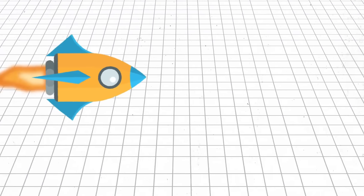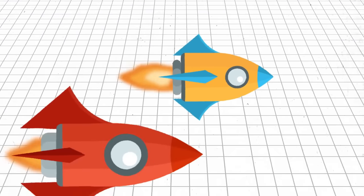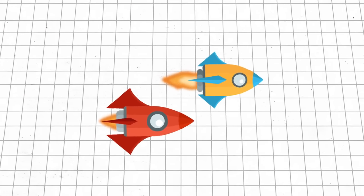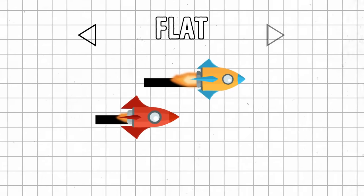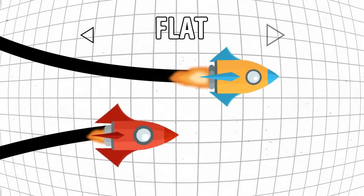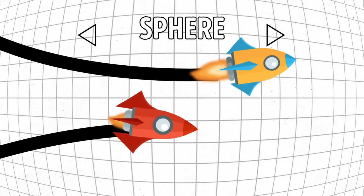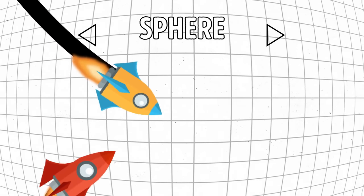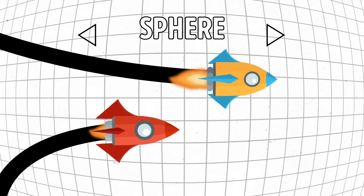The flatness of the universe isn't that two-dimensional flatness you might be imagining. In a flat universe, two rockets flying next to each other will always remain parallel. In a closed universe, their paths will diverge — they will follow the curvature of space and eventually make a loop and meet where they started.